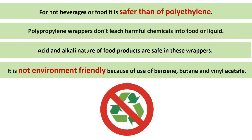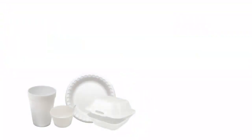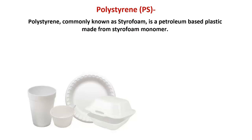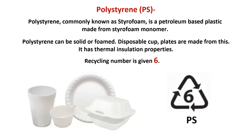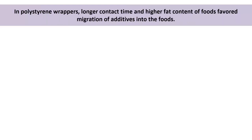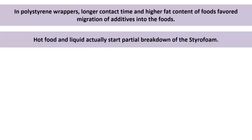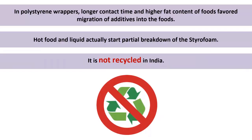Polystyrene (PS), commonly known as Styrofoam, is a petroleum-based plastic made from the styrene monomer. Polystyrene can be solid or foamed; disposable cups and plates are made from it. It has thermal insulation properties and its recycling number is 6. In polystyrene wrappers, longer contact time and higher fat content of foods favor migration of additives into the foods. Hot food and liquid actually start a partial breakdown of the Styrofoam. It is not recycled in India.